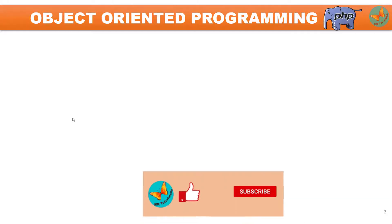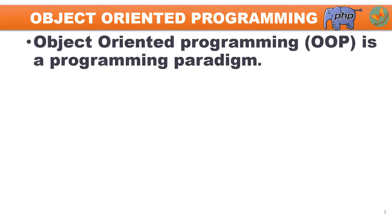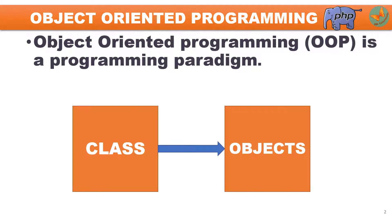Hello friends, today we are going to discuss about object-oriented programming, how it is applied in PHP, and we are going to discuss about the terms class and object. So let us first start with what do you mean by object-oriented programming. Object-oriented programming is nothing but a programming paradigm and it actually relies on the concept of class and objects. So what exactly is class, what exactly is object — we are going to see in detail.